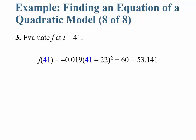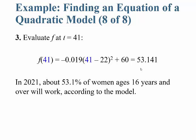To estimate the percentage of women who worked in 2021, that's t equals 41. Simply plug that into your equation: 41 minus 22, square it, multiply by negative 0.019, then add 60. You get approximately 53.141, so about 53.1% of women ages 16 and over will work in 2021 according to our model.